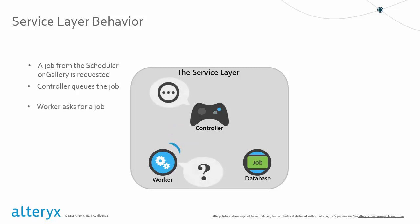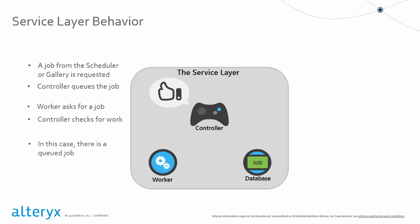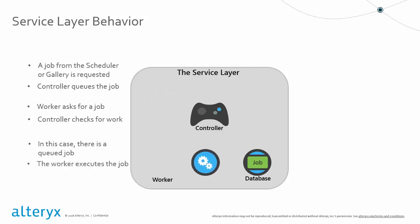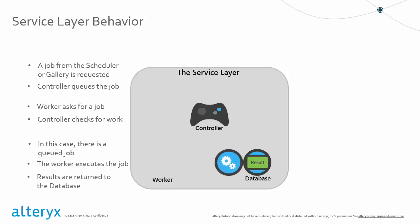For the controller-worker interaction, the service layer is really a nearly one-sided relationship between the worker and controller. The behavior of the worker is to continually ping the controller asking if there's anything in the job queue available for processing. When asked for a job by the worker, the controller will scan the job queue for any pending jobs. If one is found, it will acknowledge to the worker that the job is available for processing, and the worker will utilize the Alteryx engine for high-speed data processing and analytics functionality and produce an output. Once complete, the results will be returned to the database. The gallery or the scheduler will display results once they have been stored within that database.